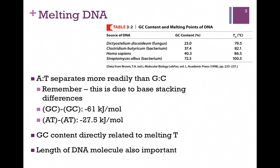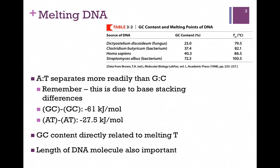If you look at the energy contained in a GC-GC base stacking arrangement, that represents about 61 kilojoules per mole. Whereas if we base stack AT-AT base pairs, that's a little bit less than half. So the GC-content of a DNA molecule relates directly to its melting temperature.